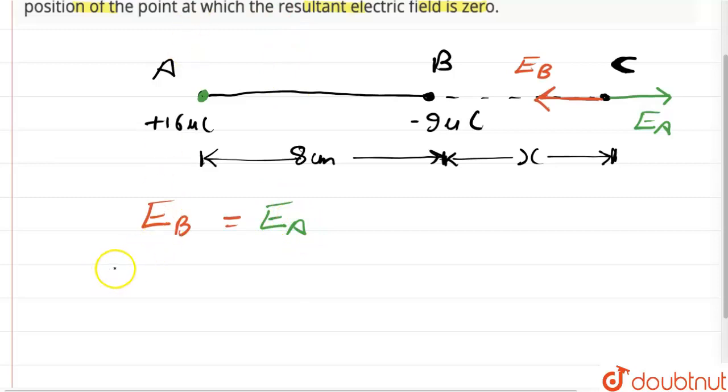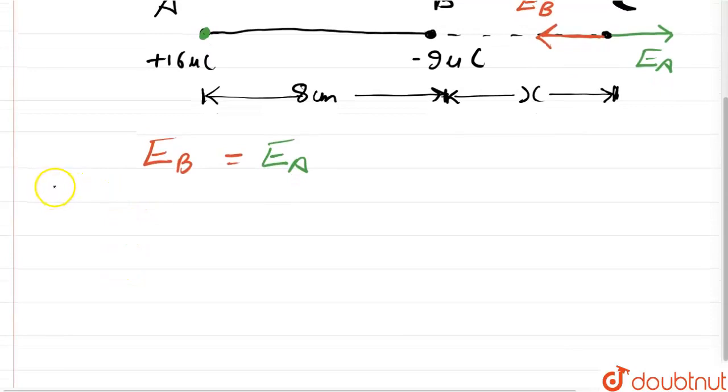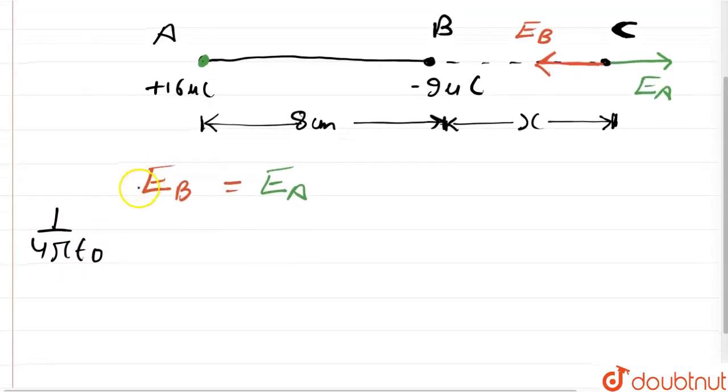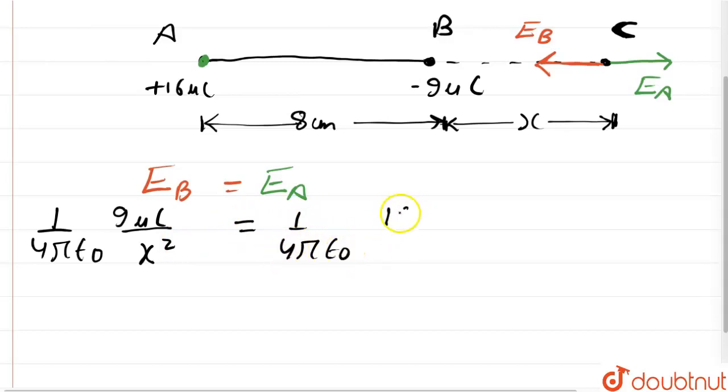Now let us write down the values of these electric field intensities. E_B can be written as (1/4πε₀) times the charge. The charge for E_B is 9 microcoulombs—we're taking the magnitude only because the direction is already accounted for. So, (1/4πε₀) × (9μC/x²) = (1/4πε₀) × (16μC/(8+x)²).